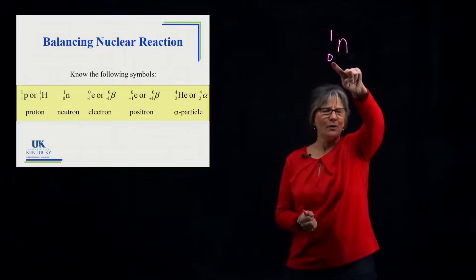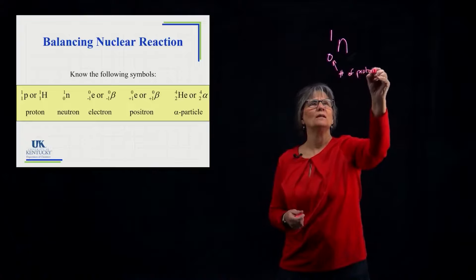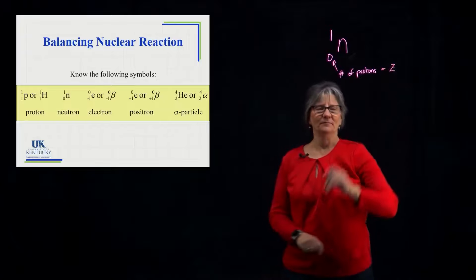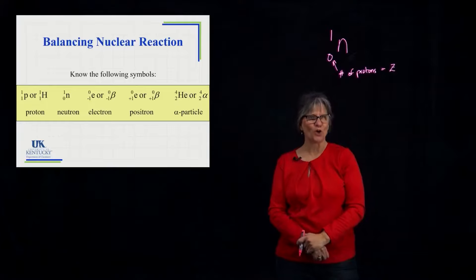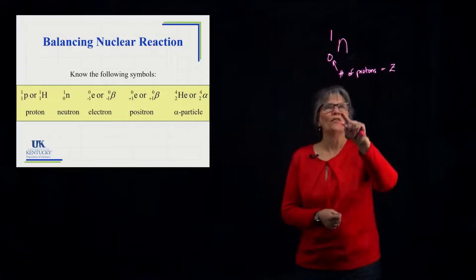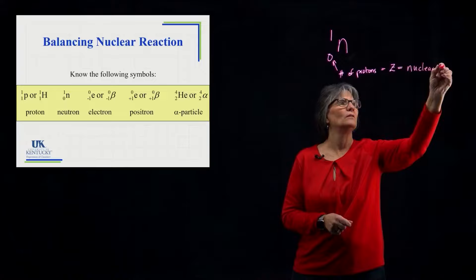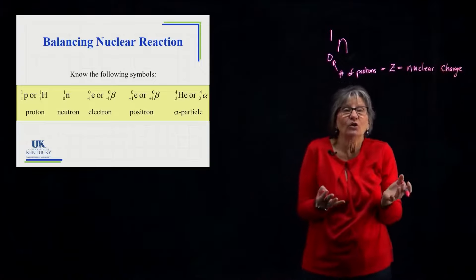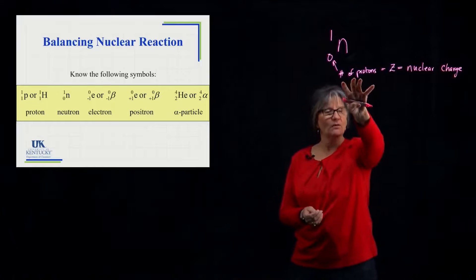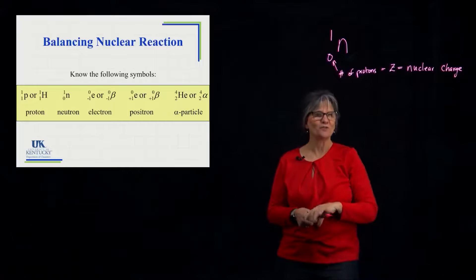I want to clarify the bottom number for a moment. We've always said it's the number of protons, represented with Z. But thinking back to effective nuclear charge, the nuclear charge and number of protons are one and the same. We want to think of this bottom number as the nuclear charge — in a nucleus you have protons and neutrons, and the nuclear charge is all of the protons, the positive charges in that nucleus. For a neutron, there are no positive charges associated with it.